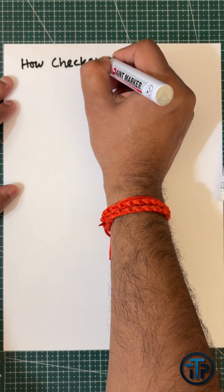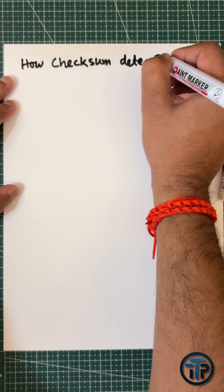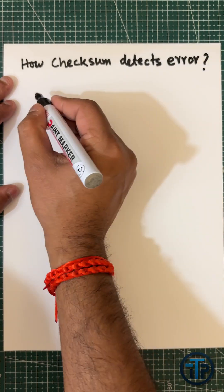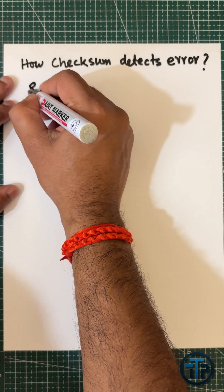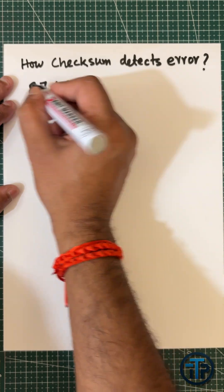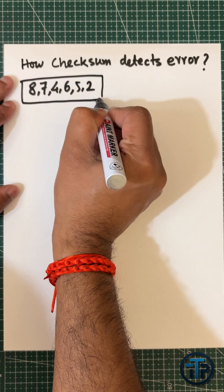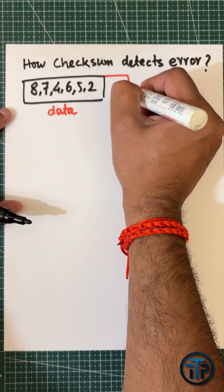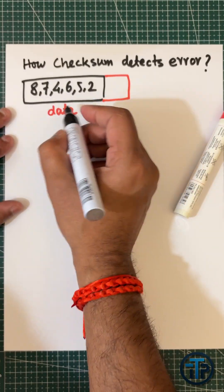How checksum detects the error. Let's take an example where a transmitter wants to send these random digits: 8, 7, 4, 6, 5, 2. These are the raw data. So what is the checksum?